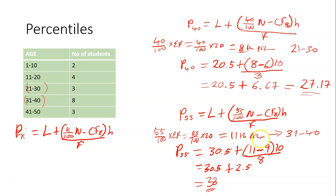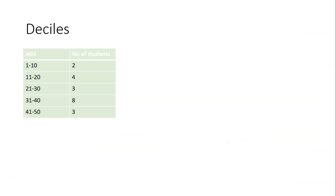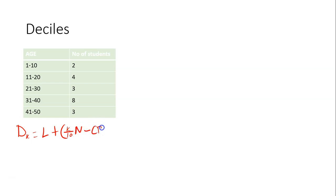So you can try other examples yourself. Let's look at the last one, which is deciles. For deciles, the formula is L plus into brackets K over 10 N minus CFB times H divided by F.